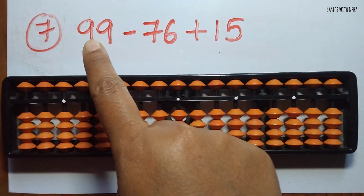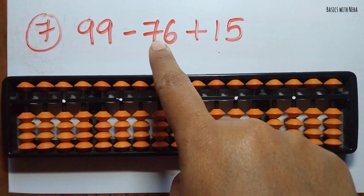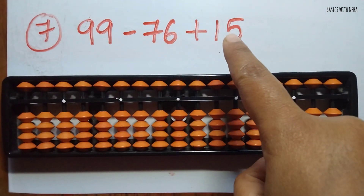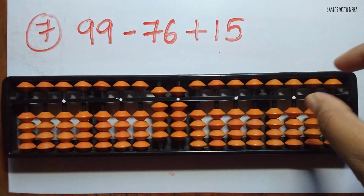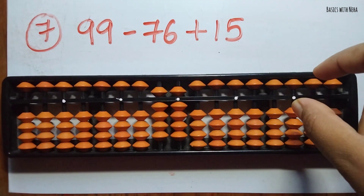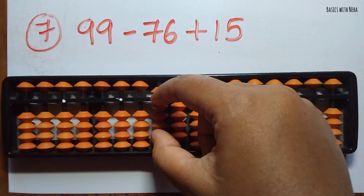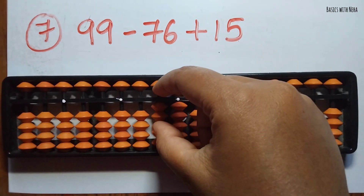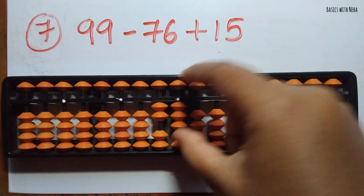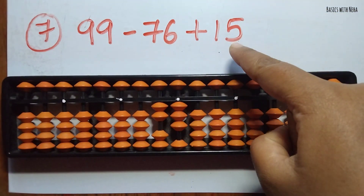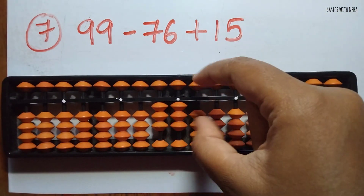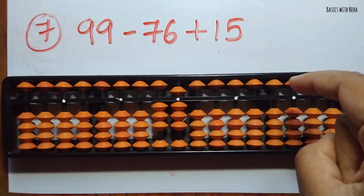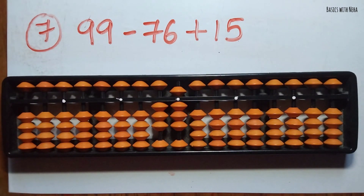The seventh question: 99 minus 76 plus 15. First take 99, now you should minus 76 — minus 7 in the 10's rod and minus 6 in the 1's rod. Now add 15 — add 1 in the 10's rod and add 5 in the 1's rod. The answer is 38.